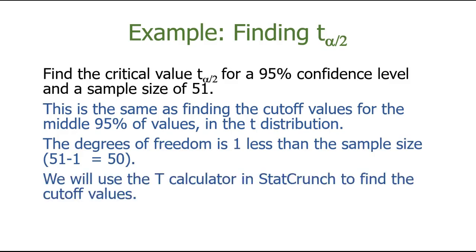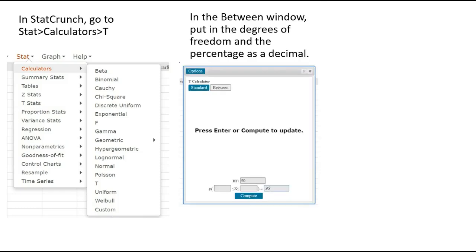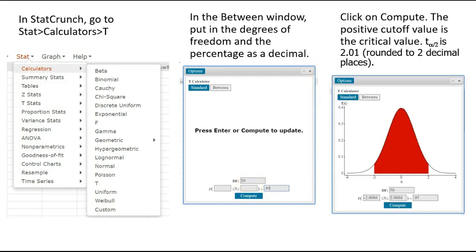To do this, we're going to use the t-calculator in StatCrunch. Go ahead and sign in to StatCrunch and follow along with this example. In StatCrunch, go into the data editor — it doesn't matter if there's data in there or if it's a blank screen. Go to Stat, Calculators, T. You should see a picture of the t-distribution come up. Then go to the Between window. Put in the degrees of freedom and the percentage — the 95% — as a decimal. So here we're putting in 50 for the df and 0.95. Then click Compute and it should show you a picture of that t-distribution.